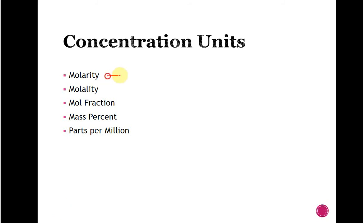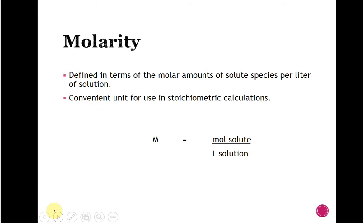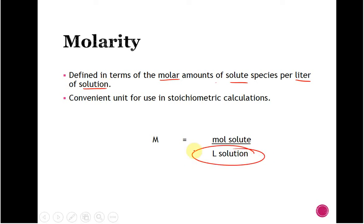We're going to be talking first about molarity, then molality, mole fraction, mass percent, and parts per million. Concentration is just the amount of substance per volume — it can be moles, grams, or milligrams. We have to consider both solute and solvent in our solution to determine how much of our reagents are really there. Molarity is defined as moles of solute per liter of solution — that's the total volume of the entire solution, not just the volume of water added.